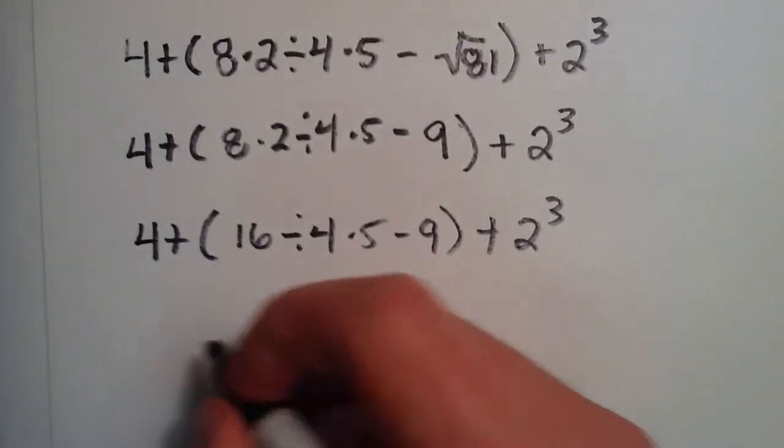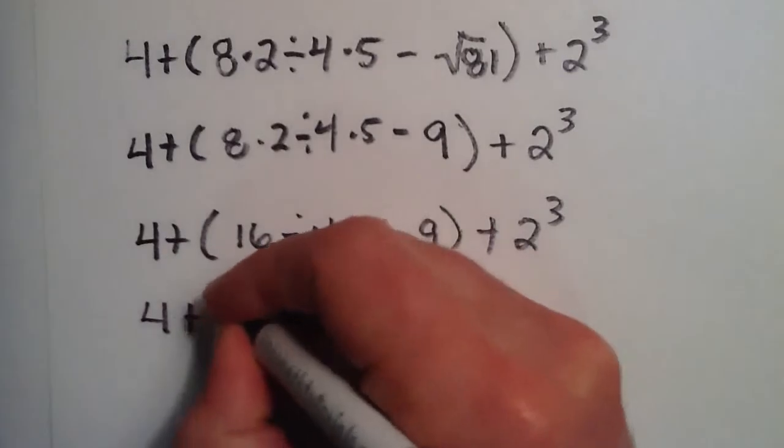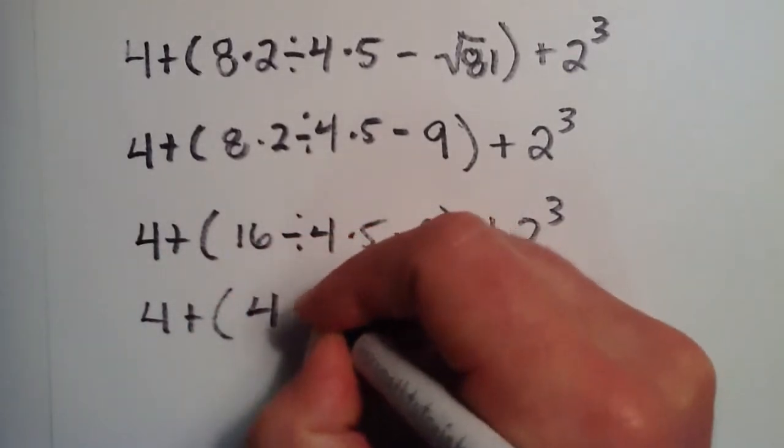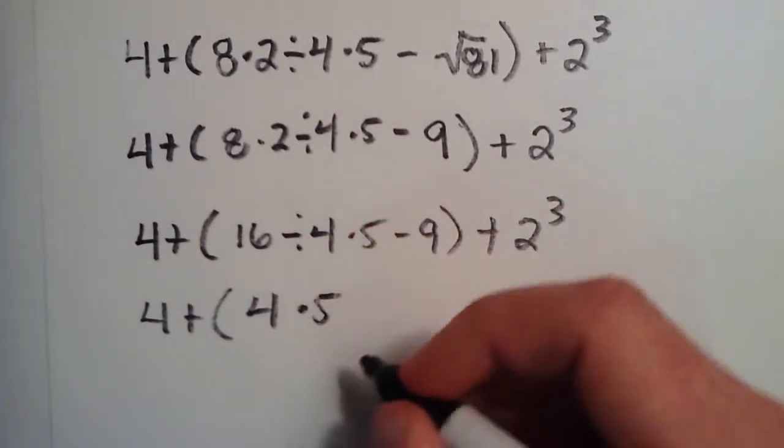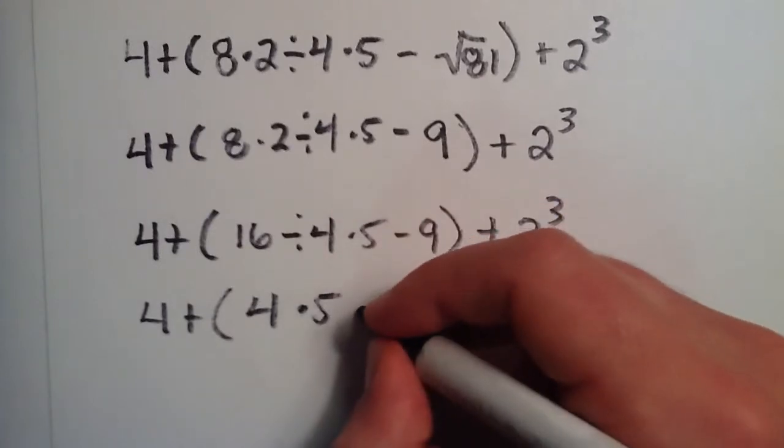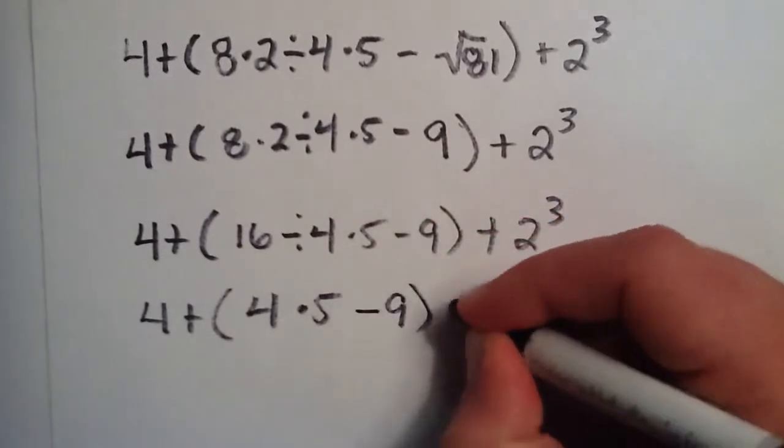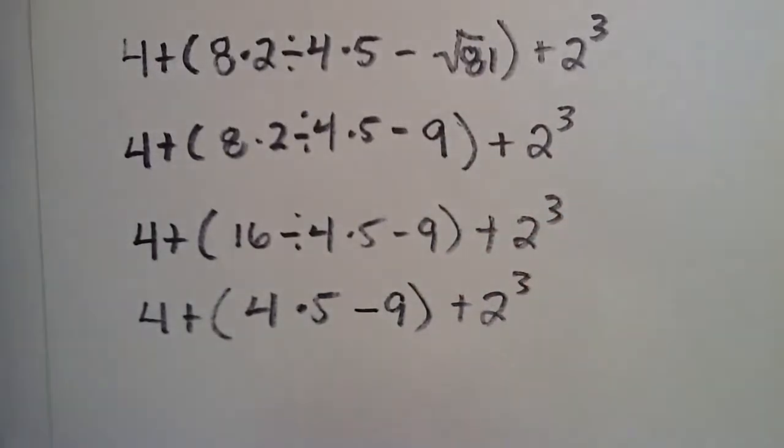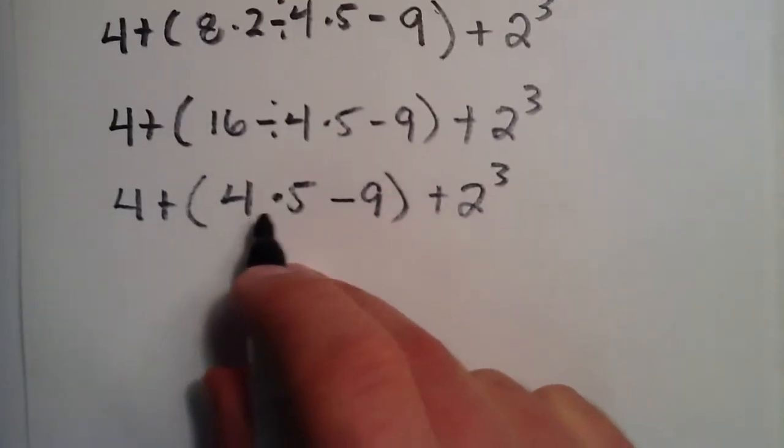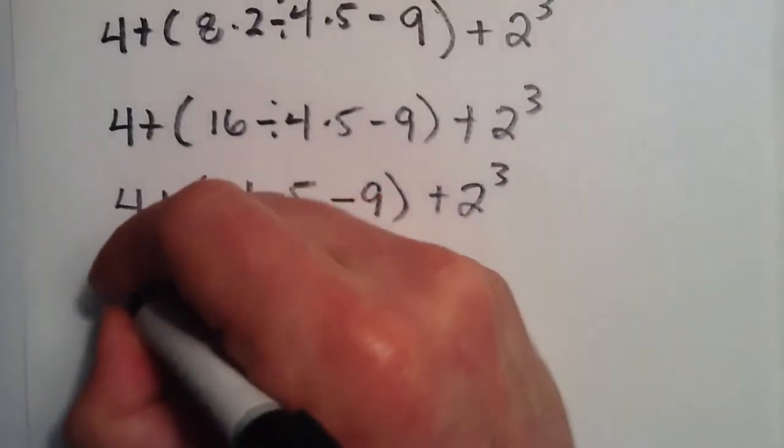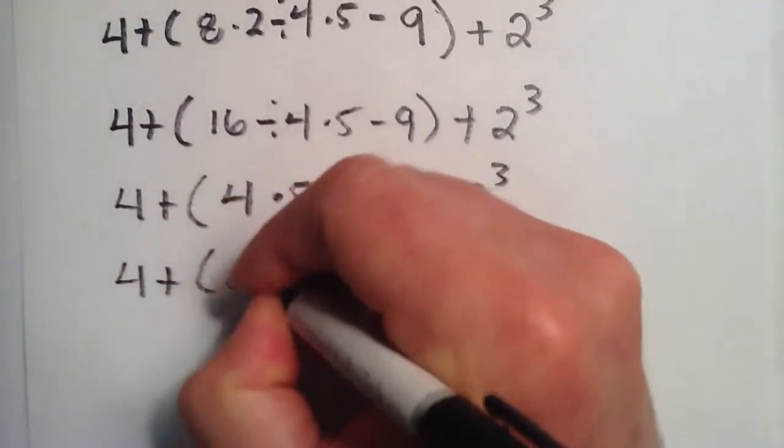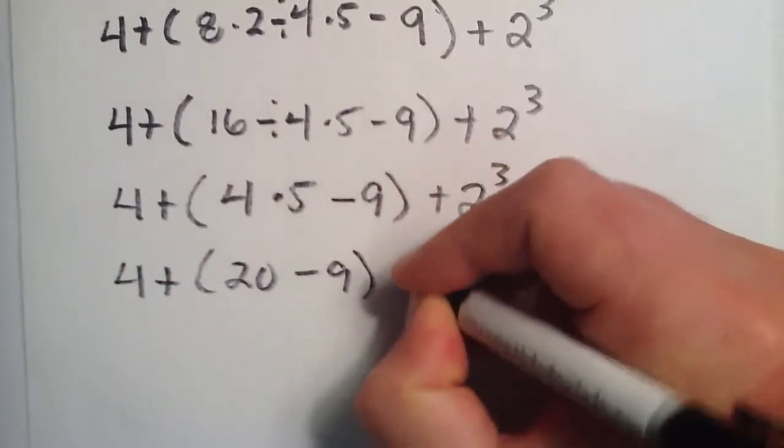Now we have 16 divided by 4. And 16 divided by 4 is simply 4. And then we multiply that times 5. Now the last thing we do is this 4 times 5, which gives us a 20. And we rewrite everything else just the same way.